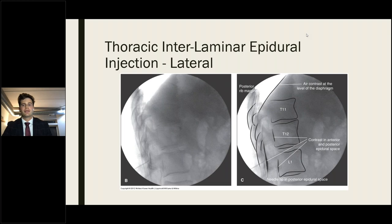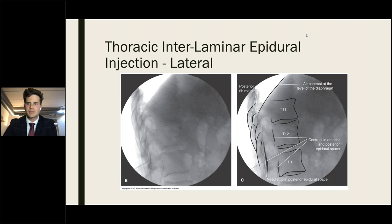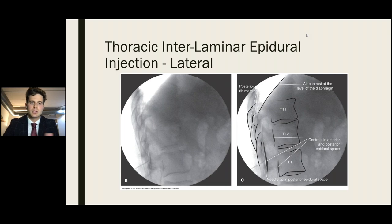A true lateral thoracic film shows leveled vertebral body end plates, alignment of rib shadows posteriorly, and circumferential neuroforamina. In the lateral image, the Tuohy needle enters the posterior epidural space with contrast visible in both anterior and posterior epidural spaces, demonstrating the three-dimensional nature of the epidural space. An air-contrast level within the diaphragm can also be seen in these images.